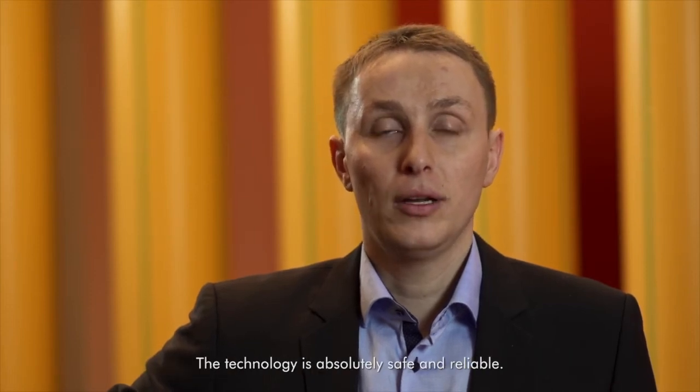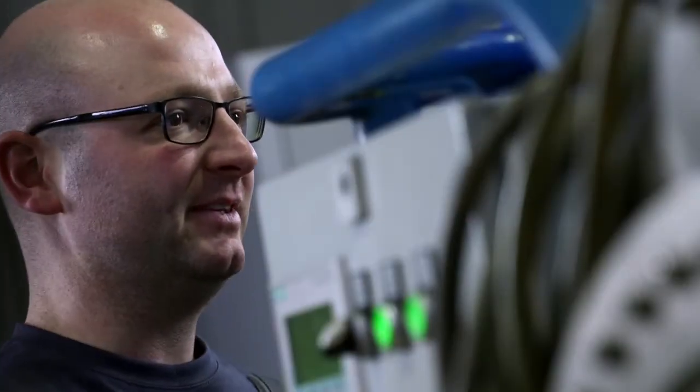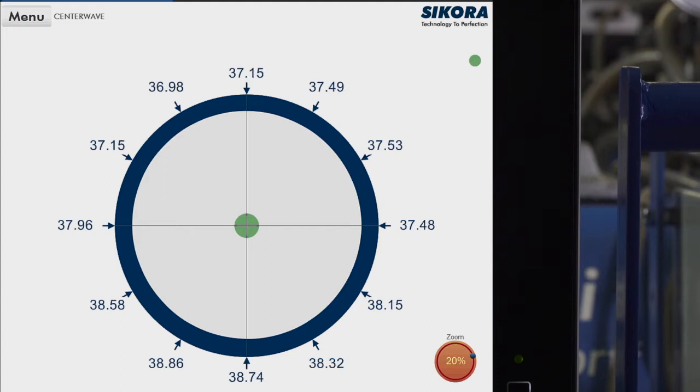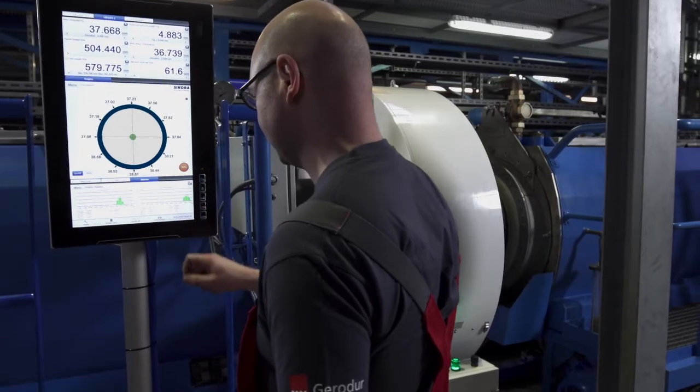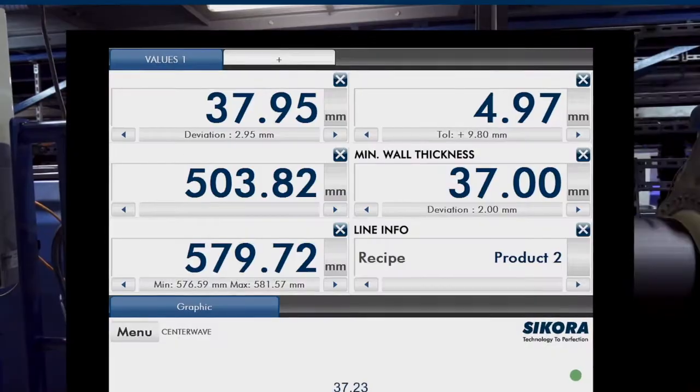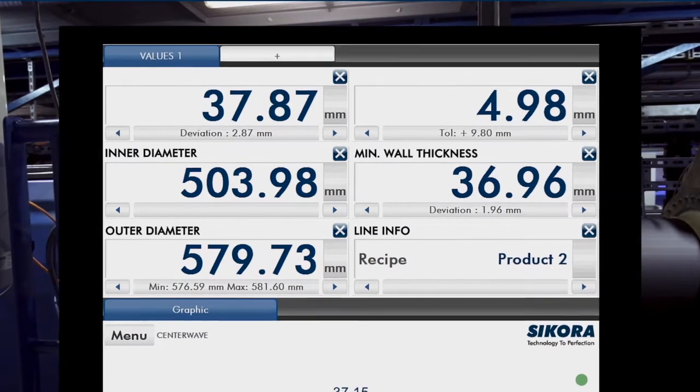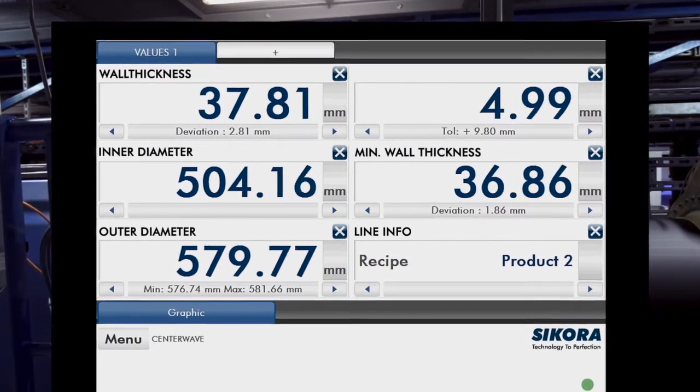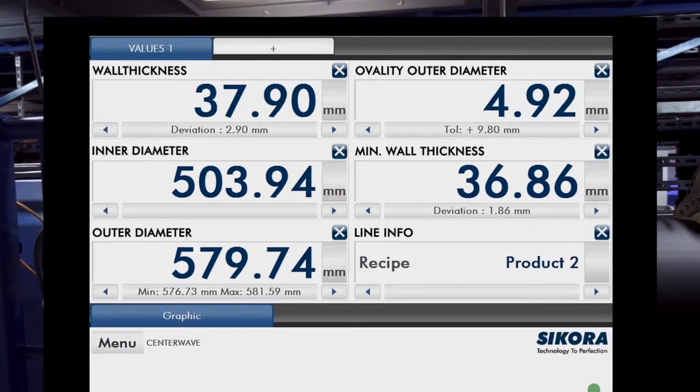The technology works absolutely safely and successfully. All data is immediately visualized at the display of the EcoControl 6000. The measuring values are displayed graphically and numerically at eight or more points of the circumference. The outer and inner diameter, the wall thickness of each layer, the ovality, the sagging.